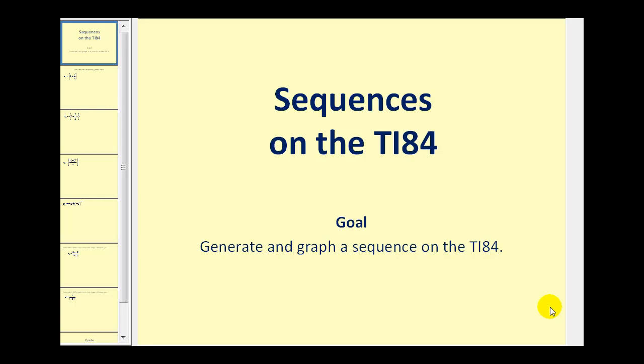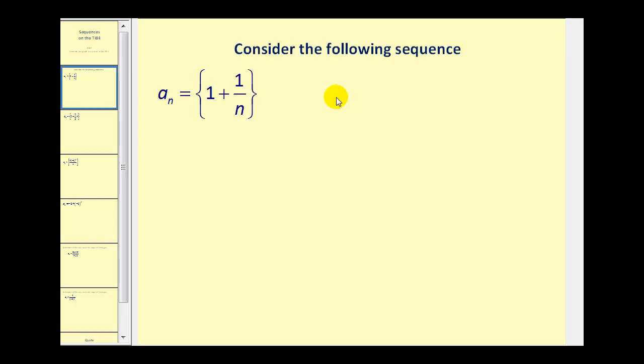Welcome to a video on sequences on the TI-83 or 84 graphing calculator. This video will show how to generate and graph a sequence on the graphing calculator. For example, if we have a sequence generated by a sub n equals one plus one over n, we can generate this on the graphing calculator.